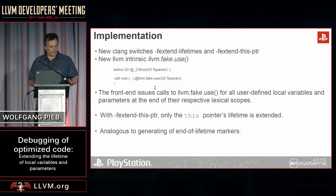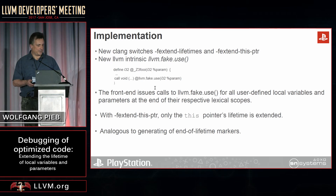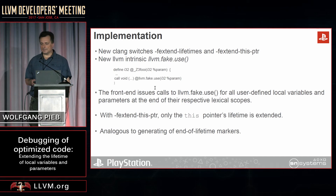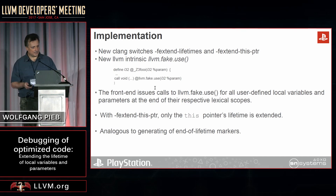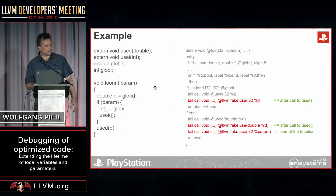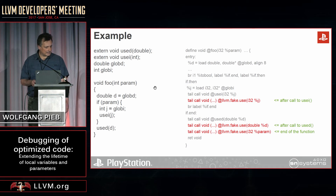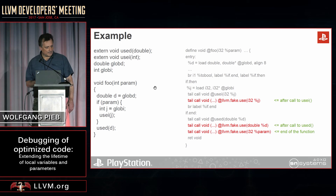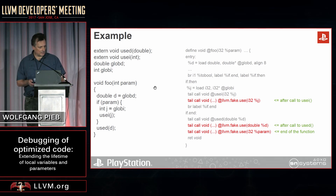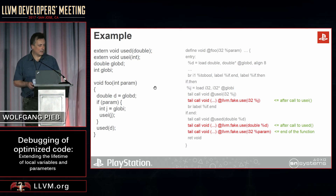We're doing this for all local variables at the end of their respective LLVM scopes, using an algorithm similar to what we use for generating end-of-lifetime markers. There's a cleanup structure pushed on the exception handling stack, and when it gets popped off, we generate the fake use. Here's a small example — a small routine with a couple of locals and a parameter — and you can see on the right side the IR it generates. We're generating fake use calls for each of these locals. The key point is that the middle one, variable J, gets generated after its last use, which is the call to use I, making it available after that call, which would not otherwise be the case.